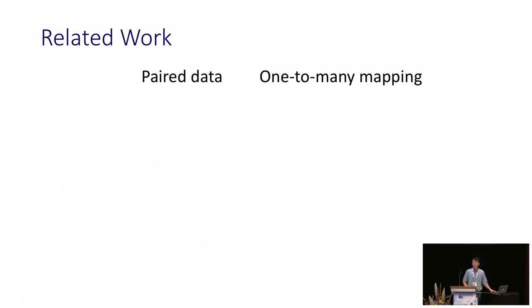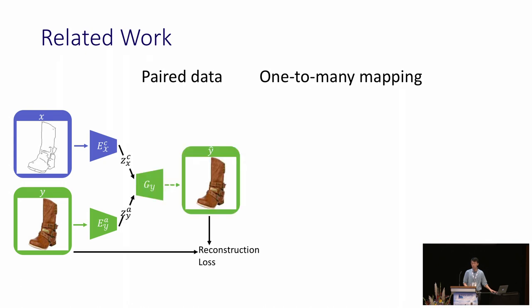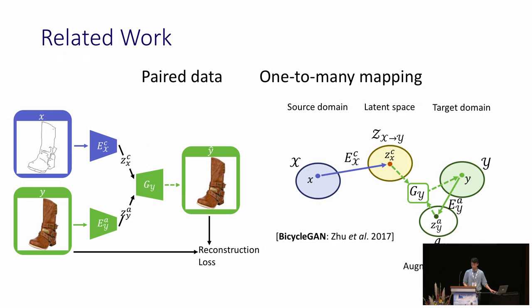Now let's see how to tackle the multi-modal constraint. Assuming we have paired training data, one domain provides the common information like shape and contour, and the other domain provides the style information like color. These two components are used to reconstruct the target images and can be trained with the reconstruction loss. This augments an additional space for the target domain.